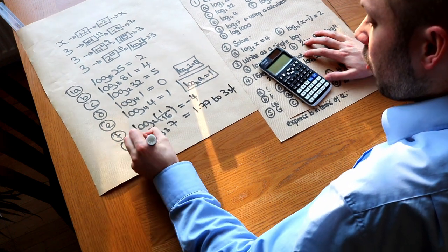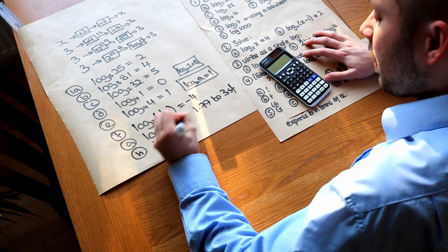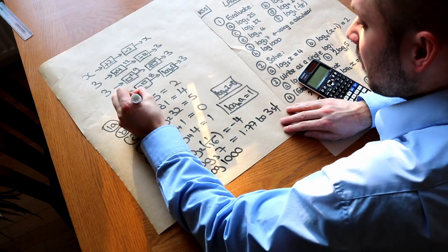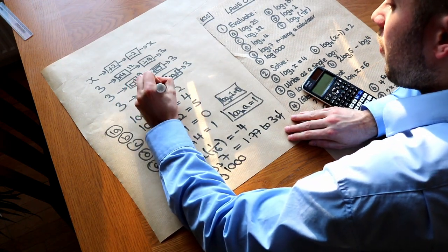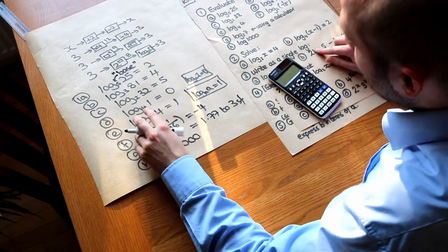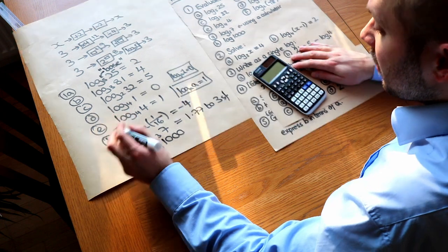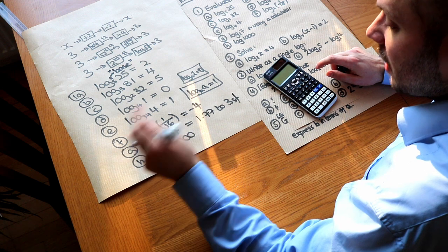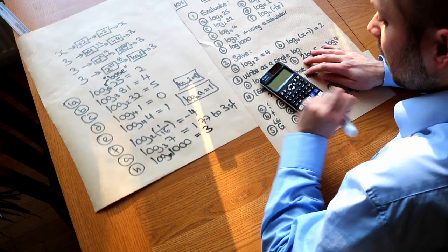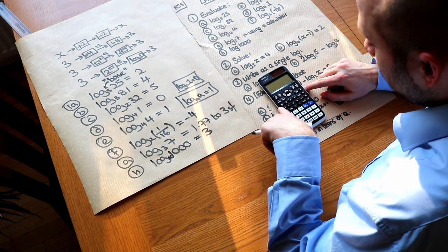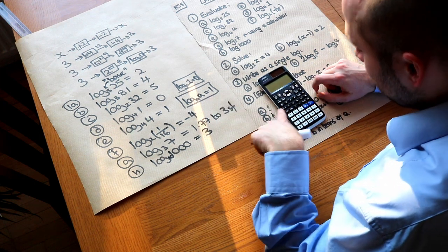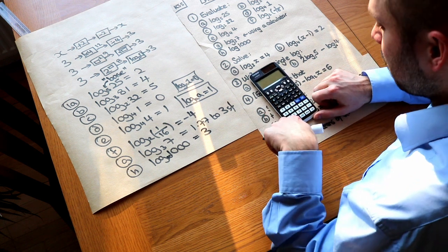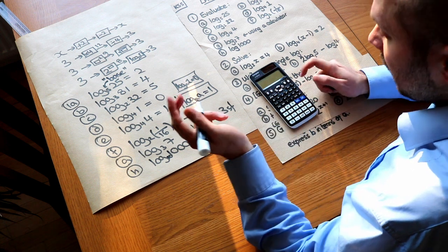Finally, log of a thousand. Notice there's no small base number — that small number is called the base of the logarithm. If no base is specified, by default it's log base 10. So 10 to the power of what is a thousand? 10 to the power of 3 is 1000, so the answer is 3. You can find this on the calculator using the log button without a base — put in 1000 and it gives 3.